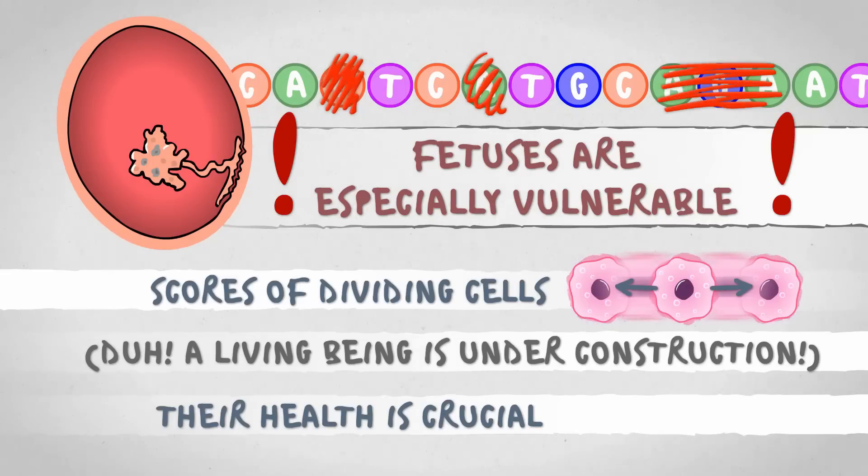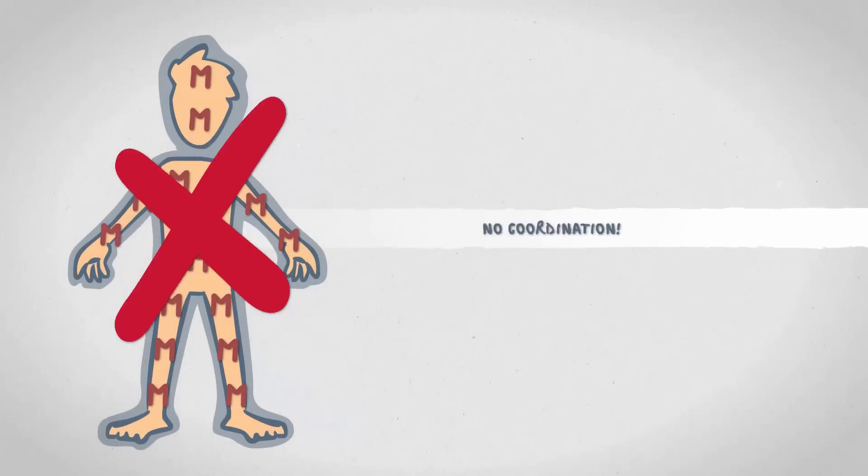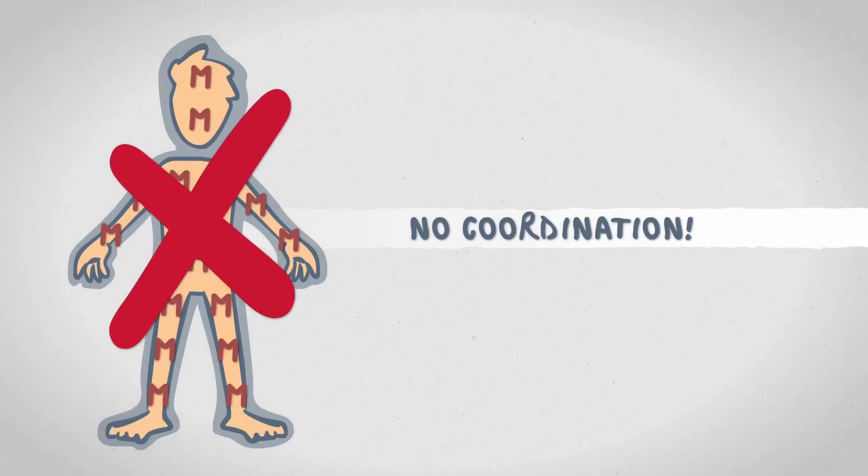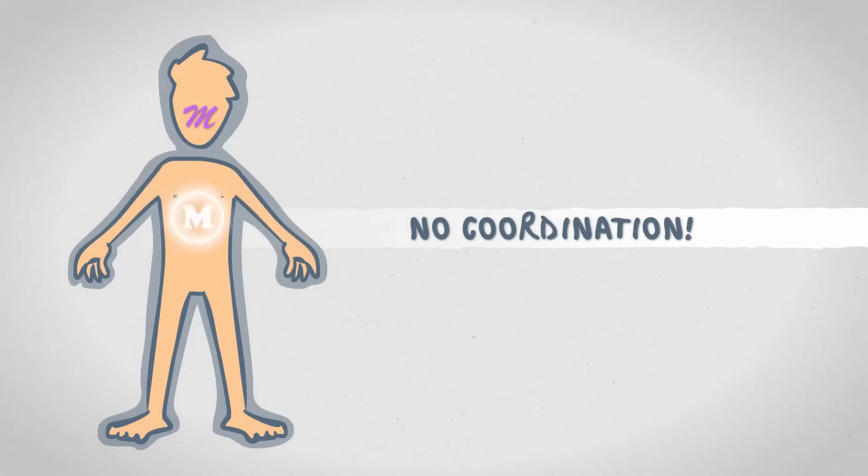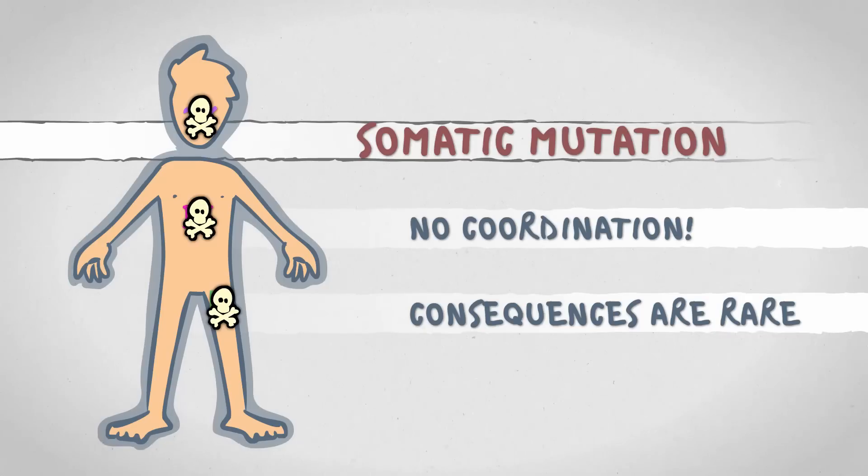So we have seen that all the cells in the body will never mutate in the same way at the same time. Various cellular mutations may appear here and there, most of the time without any consequences, because they either die or get their asses handed to them by the immune system. These are called somatic mutations.